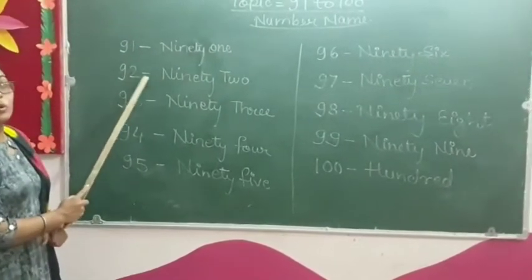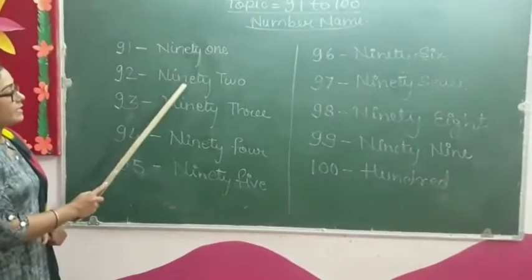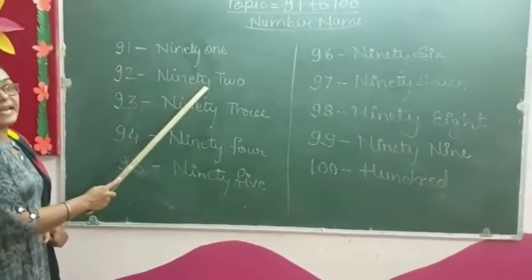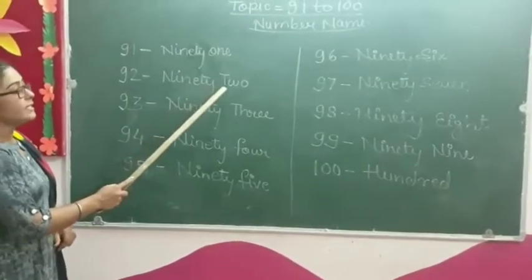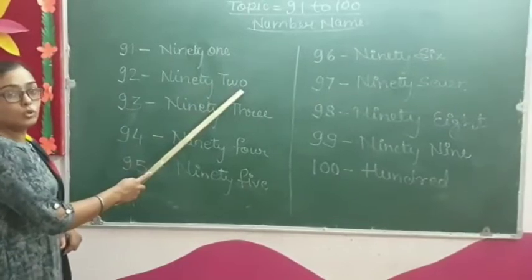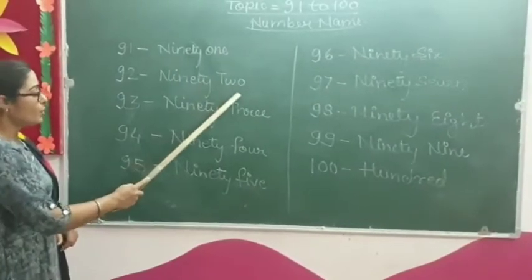Ninety-two. N-I-N-E-T-Y — 90 — T-W-O — 2. Ninety-two.